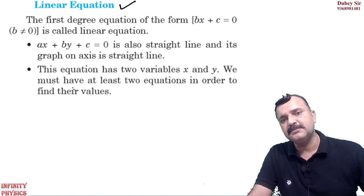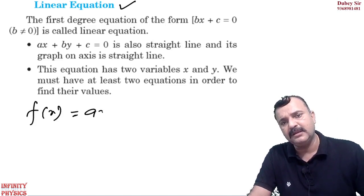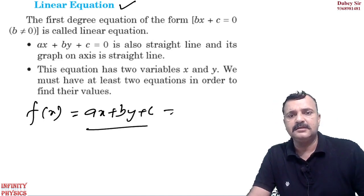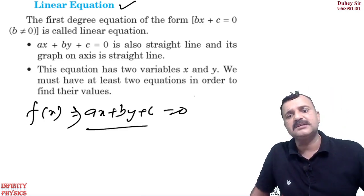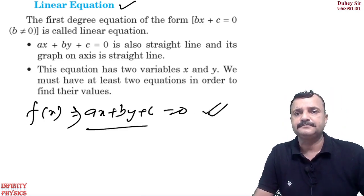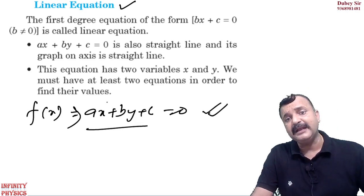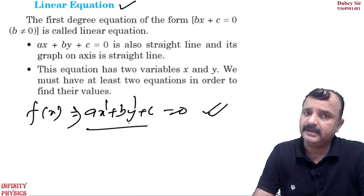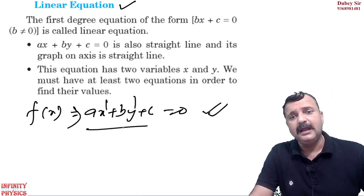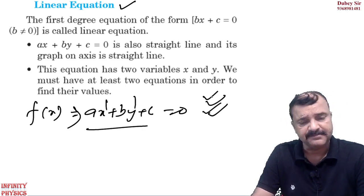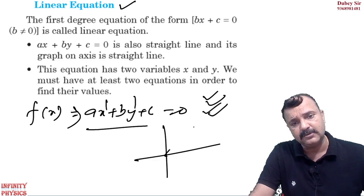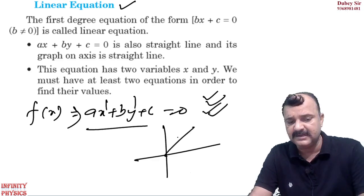Now, how do we write a linear polynomial equation? If any function f(x) is given, we write it as ax + by + c = 0. This is the equation of a straight line, where the power of x is 1 and the power of y is 1. If written in this form, it represents a linear equation. If you plot its graph, it will be a linear graph.